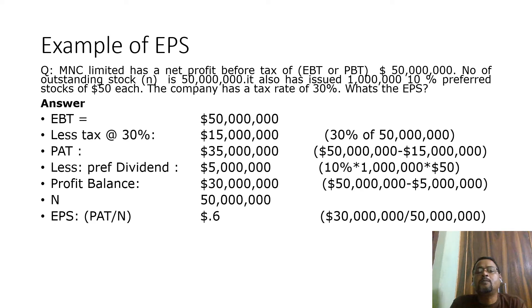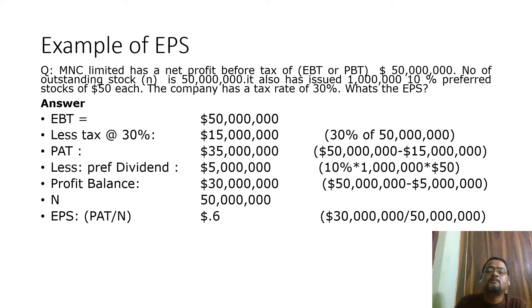For example, the company earns a profit of $50 million, it pays a tax of 30 percent — $15 million — so profit after tax comes to $35 million. Preference dividend of $5 million is paid, leaving a balance of $30 million available for paying equity dividend. One must remember that any agreed preferred dividend must be paid before equity dividend can be declared.